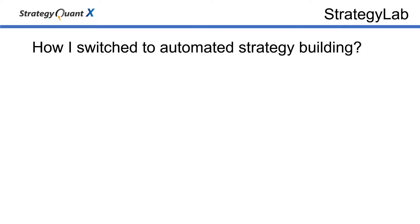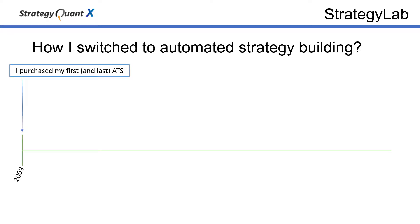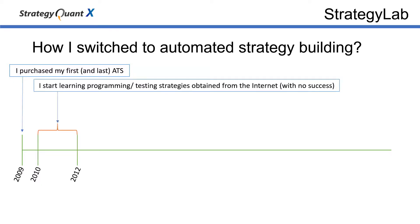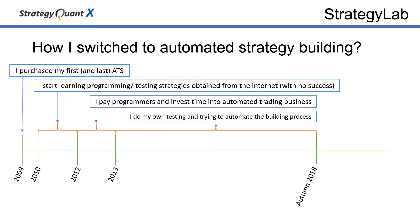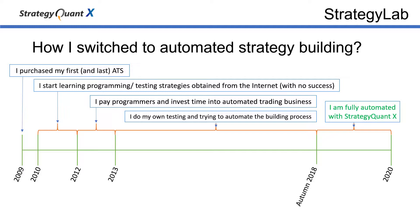It took me tens of thousands of dollars and thousands of hours to reach the stage where I decided to go from discretionary trading to fully automated. I am very happy with the current setup as it leaves me a lot of time to do other important things in my life rather than babysit or code. Plus, I get many more robust strategies in my data bank to combine into a portfolio for trading.